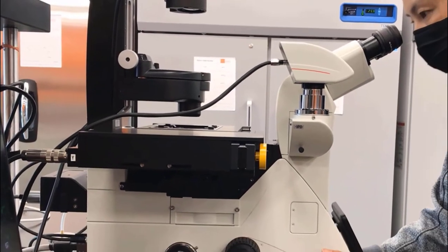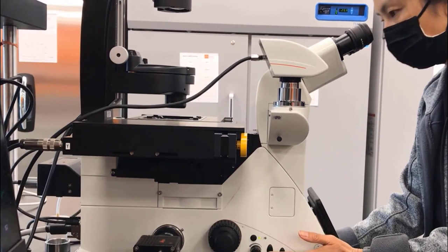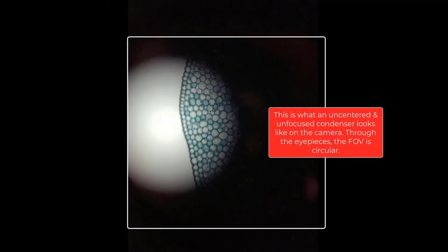You can look through the eyepieces to confirm that you're closing down the field diaphragm. This is what an uncentered and unfocused condenser looks like on the camera. Through the eyepieces, the field of view is circular, but you should still be able to see an off-center circle with a blurry edge.